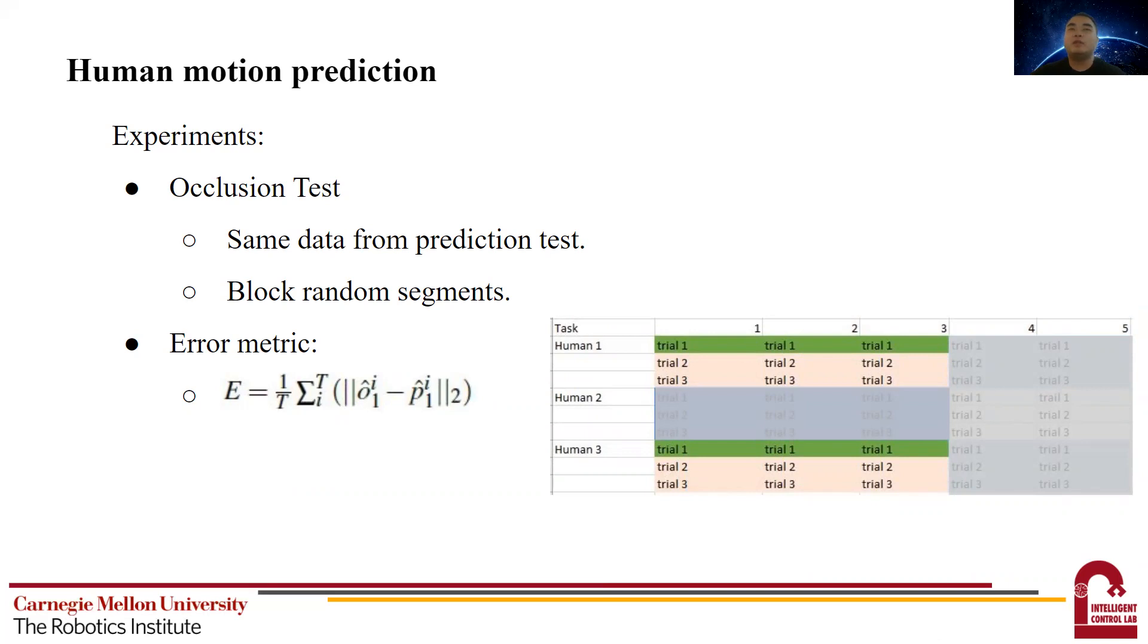We use this because the algorithm is considered stable if the variation is small when predicting with and without occlusion.